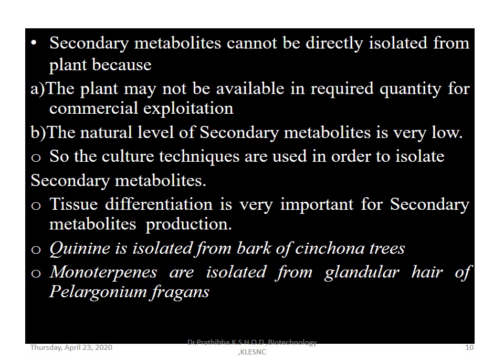Secondary metabolites cannot be directly isolated from plants because the plant may not be available in the required quantity for commercial exploitation. The natural level of secondary metabolites is very low. Therefore, culture techniques are used in order to isolate and obtain more secondary metabolites and to fulfill societal demand. We depend on plant tissue culture — that is, in vitro techniques — to obtain secondary metabolites. Tissue differentiation is very important for secondary metabolites production.